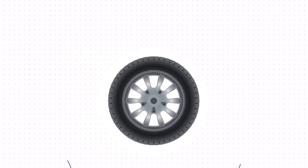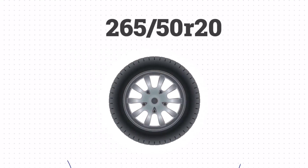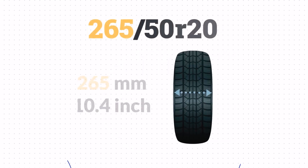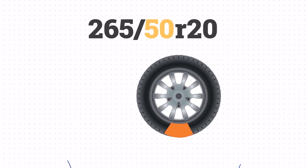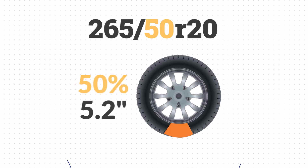Let's look at how these numbers translate to a real tire. This tire doesn't list P or LT, so it's a passenger tire. The 265 means the width is 265mm or 10.4 inches wide. Then we have the aspect ratio. This number represents the size of the sidewall compared to the section width. The 50 in this case means that the sidewall is 50% of the width, or 5.2 inches.